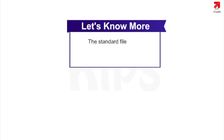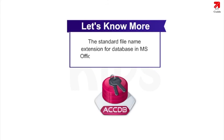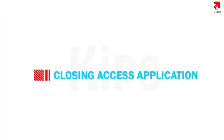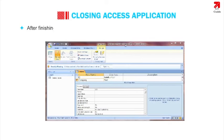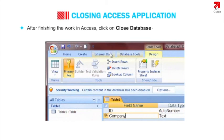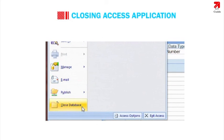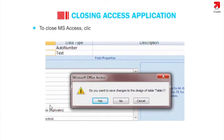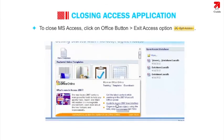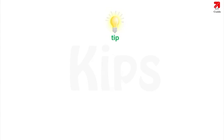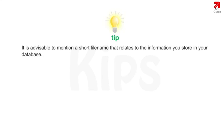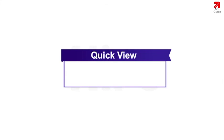Note that the standard file name extension for databases in MS Office Access 2007 is .accdb. To close the current database, click on Close Database option in the Office button menu. To close MS Access entirely, click on Office button and then Exit Access. It is advisable to use a short file name that relates to the information stored in your database. You can also press Alt + F4 to quickly exit Microsoft Access.